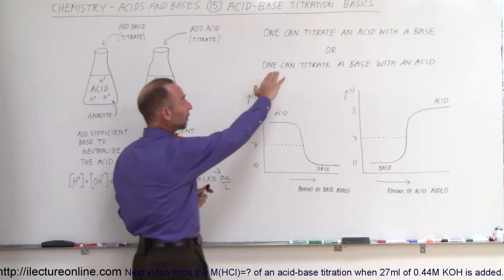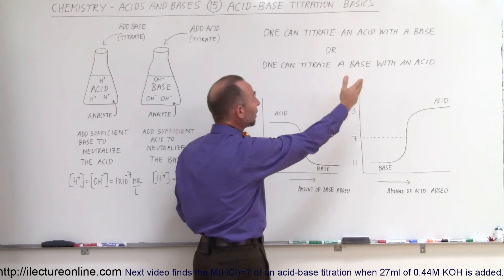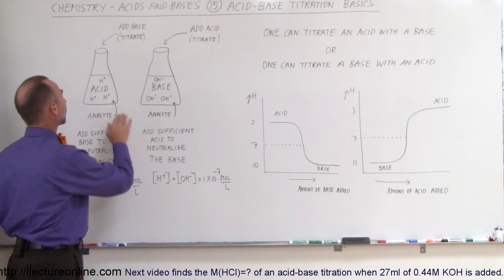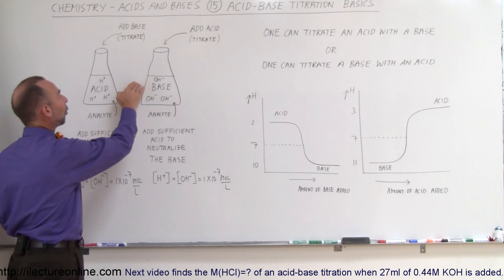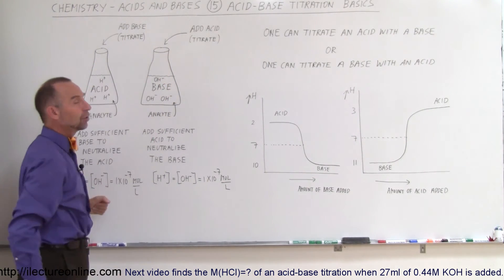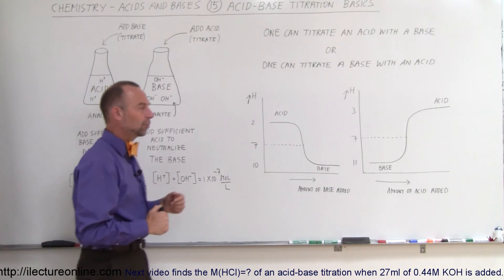You can titrate an acid with a base and you can titrate a base with an acid. The purpose is to find out what the original pH was of the acid or base you're trying to analyze. Therefore, they're called the analyte, and what you're adding is called the titrate.